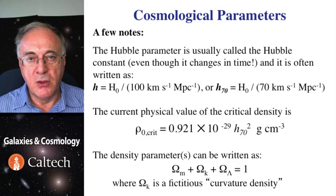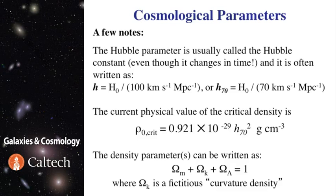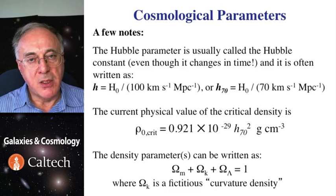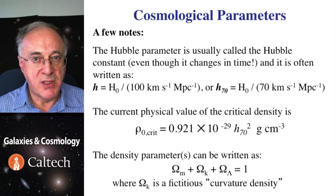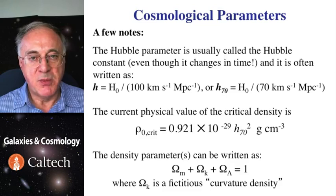And that is denoted with lower case h, normalized Hubble constant. Then you can scale for other values of the Hubble constant as you wish. Sometimes it's divided by 70, which is actually very close to its present value. And that's denoted as little h with a subscript 70. And that is Hubble constant in units of 70 kilometers per second per megaparsec.